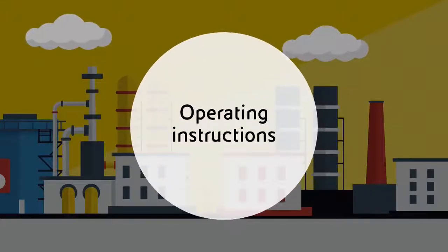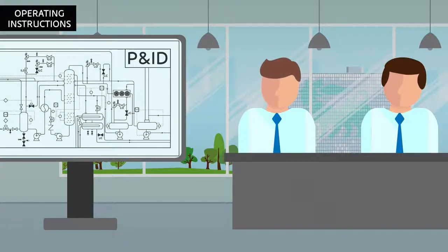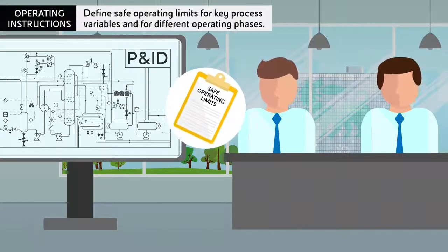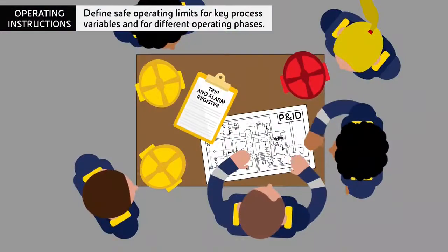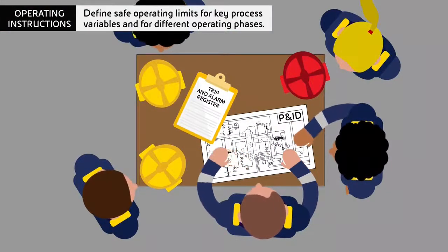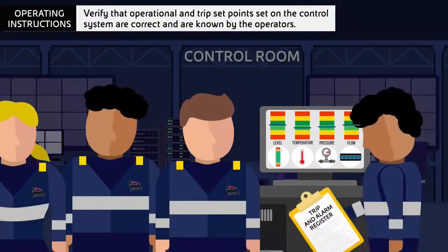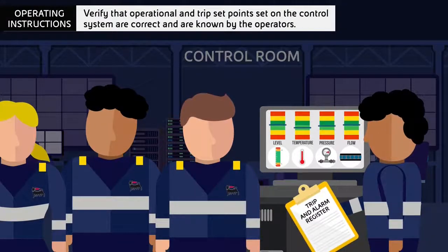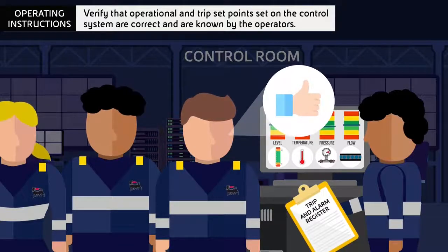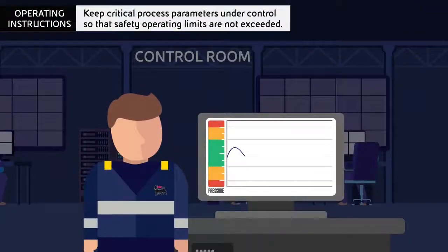Operating instructions. Define safe operating limits for key process variables and for different operating phases. Verify that the operational and trip set points set on the control system are correct and are known by operators. Keep critical process parameters under control so that safety operating limits are not exceeded.